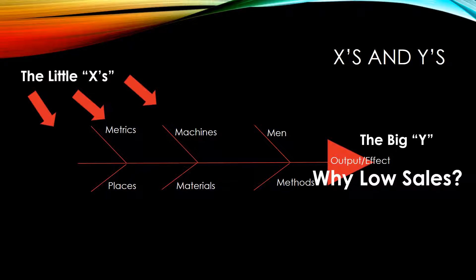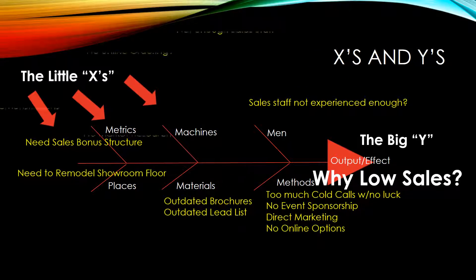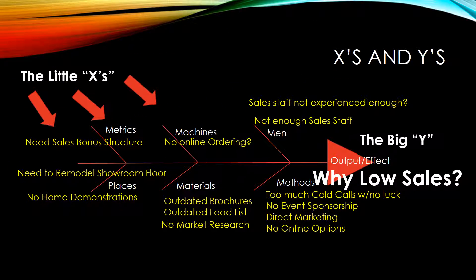We get subject matter experts in a room, we're working on a fishbone, and we get lots and lots of ideas up here. They range everywhere from needing some type of sales bonus structure listed under metrics, all the way to machines not having any method for customers to order online. We talk about outdated brochures, tons of things that contribute to why we have low sales right now.